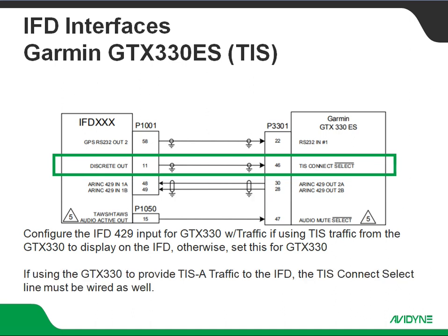And assuming we are going to use the TIS traffic from the GTX 330, you'll also want to wire up this discrete output from the IFD. This is your TIS connect select line. If we're not using the GTX 330 with traffic, if we're not using that TIS traffic, you can ignore this line.